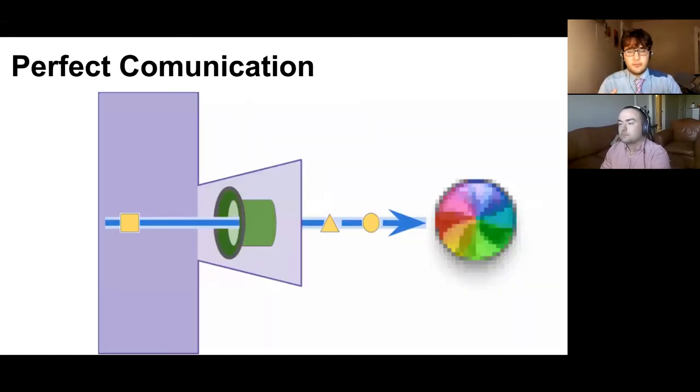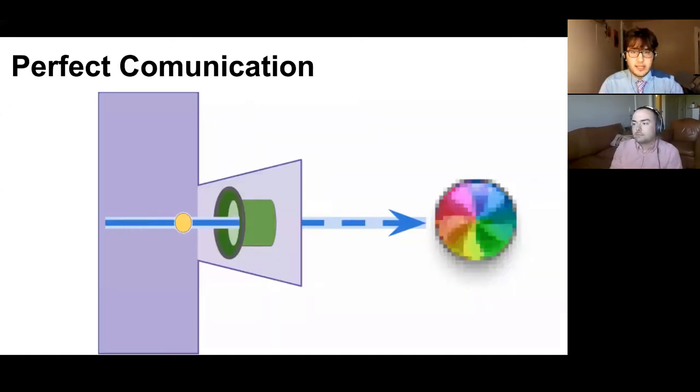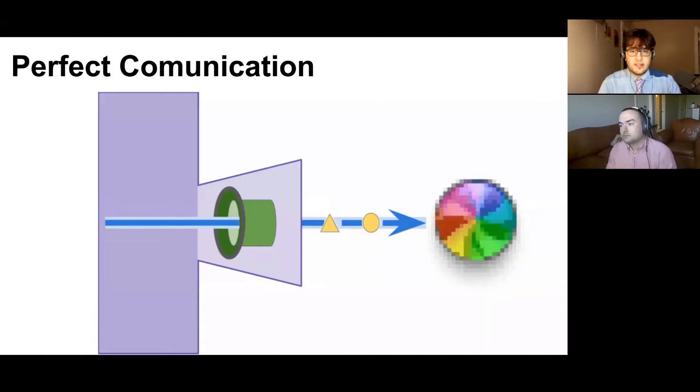This is an example animation of what the perfect communication model would look like. In this case, the buffer increases as new messages go in.